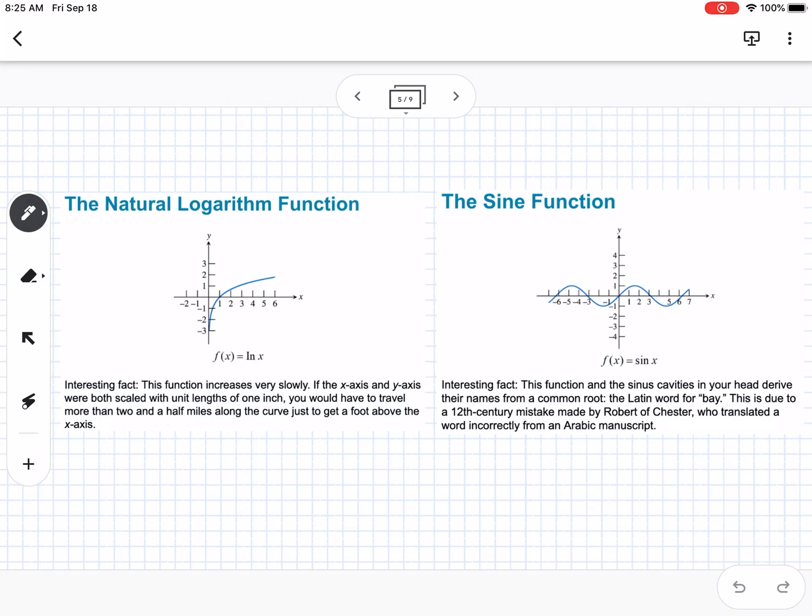The natural logarithm function is f(x) = ln(x). This function increases very slowly. If the x and y axes were both scaled with unit lengths of 1 inch, you would have to travel more than two and a half miles along the curve just to get a foot above the x-axis.